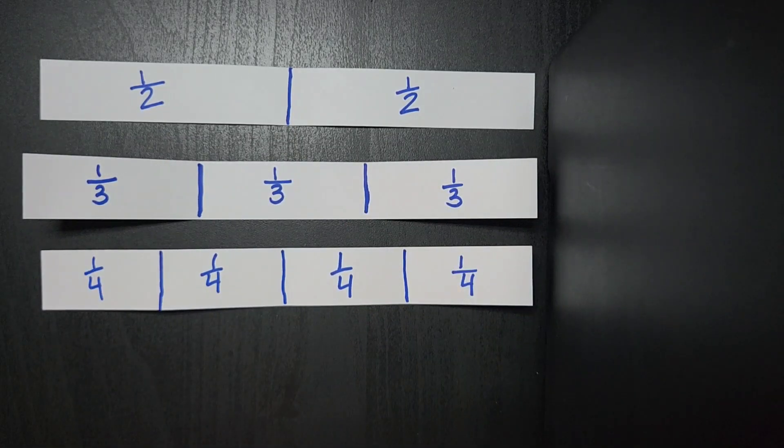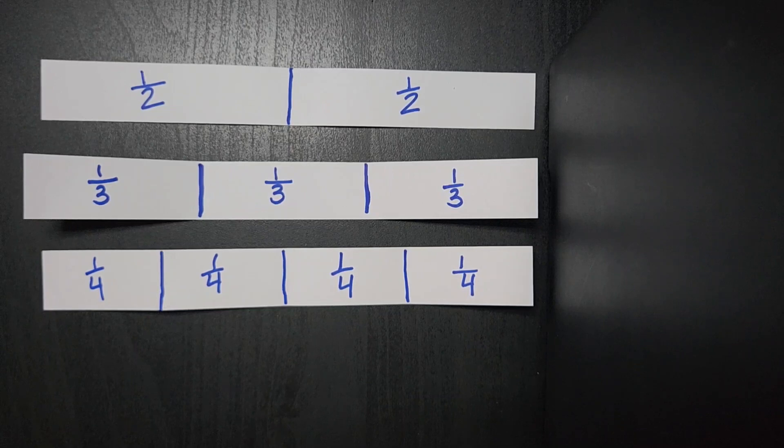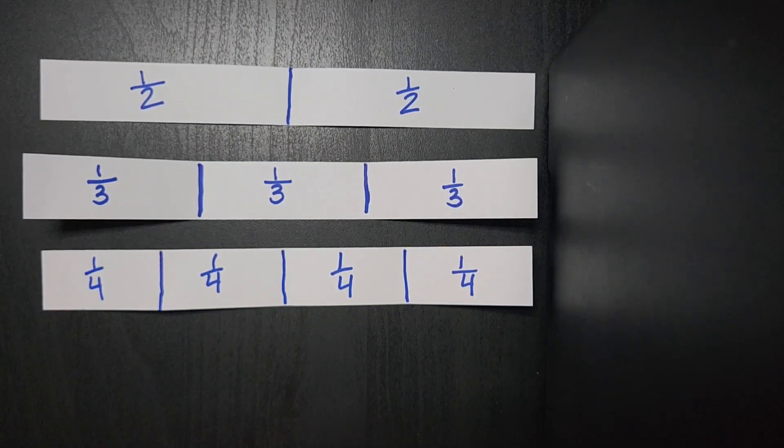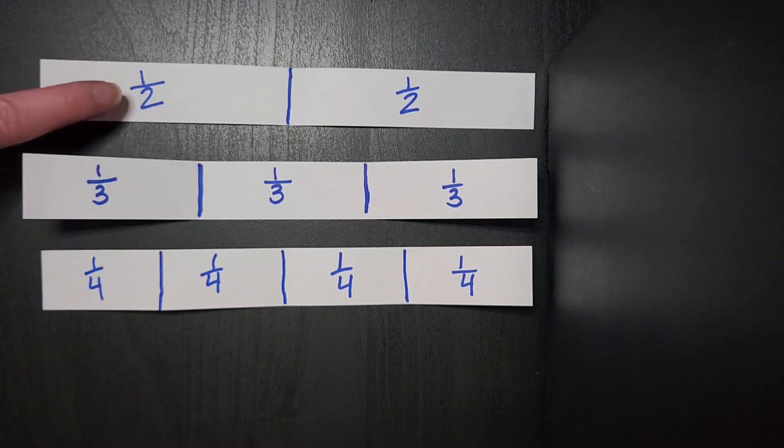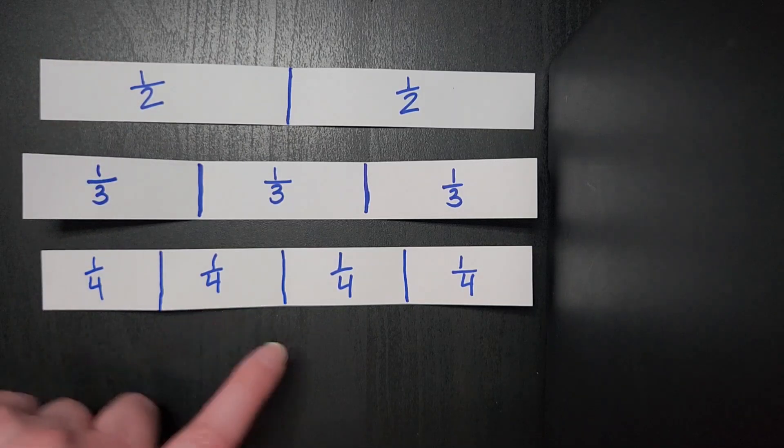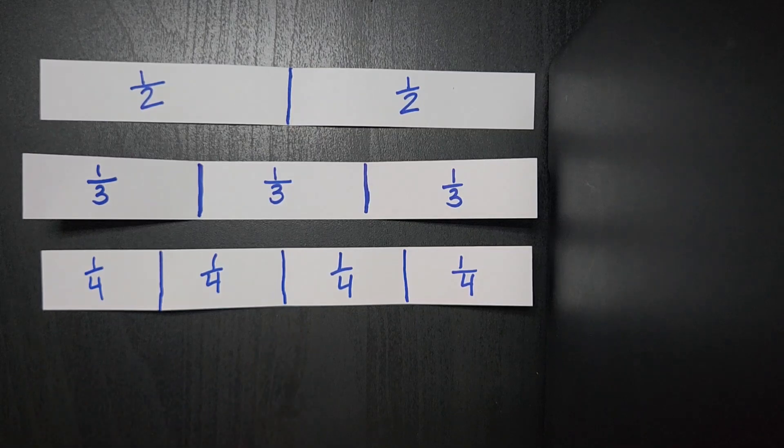So I skip fifths next, and I tell the kids I'm going to skip fifths because it's too hard to freehand. But I ask them then, how do they think we should make sixths? And usually, somebody says in half, because they've recognized the even numbers have a halfway point. And we talk about how that's what makes an even an even, that there's same sides have the same amount.